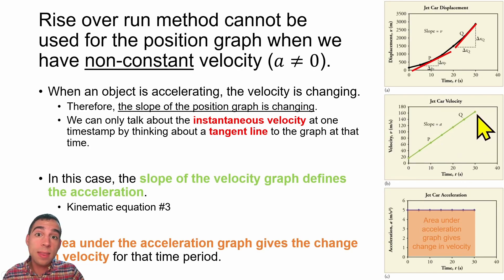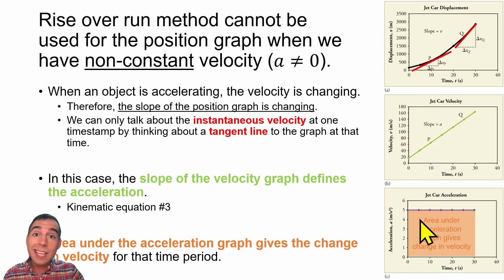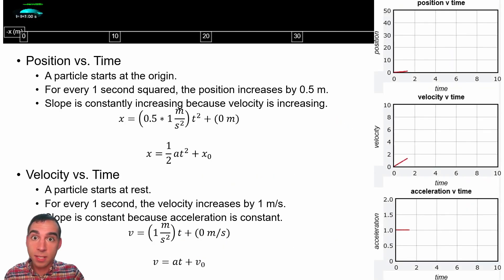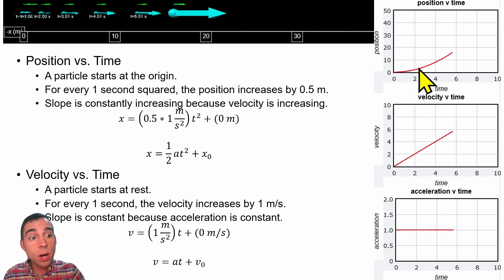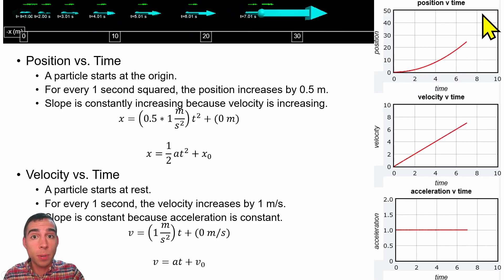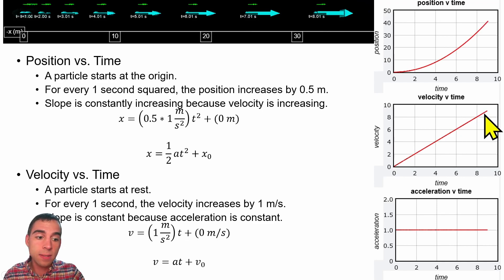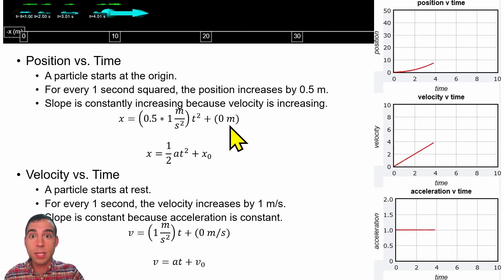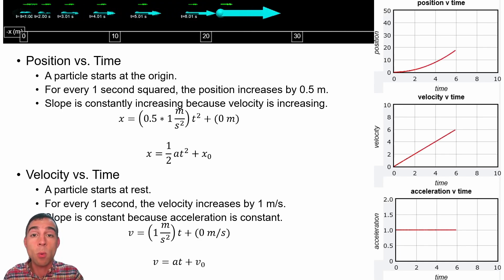Much like previously where the area under a velocity graph gave us the displacement or change in position, we can take the area under an acceleration graph to give us a change in velocity over a given time period. Here we have an example of an object experiencing acceleration—it starts off slow and continues moving faster and faster. We see a quadratic shape in the position versus time graph, a linear relationship in velocity versus time, and a constant relationship in acceleration versus time. This gives us the generic and specific math models, along with the verbal models describing the intercept and slope.